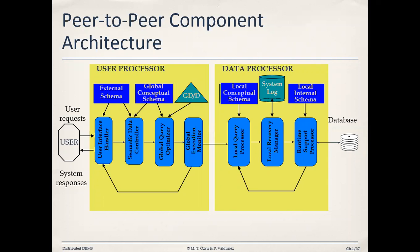Today we will discuss peer-to-peer component architecture. As you can see on this slide, there are two major components: one is called the user processor and the second is called the data processor. The user will generate a request — this means the user can generate queries or run applications based on data organized in the peer-to-peer component architecture. That request is received first at the user processor end, where the first component is called the user interface handler, or UI handler.